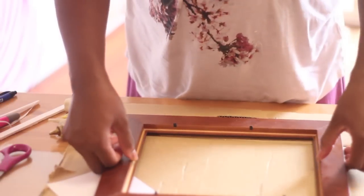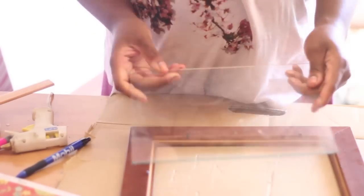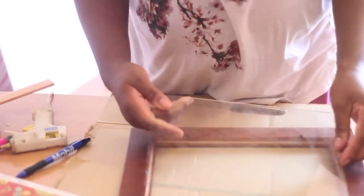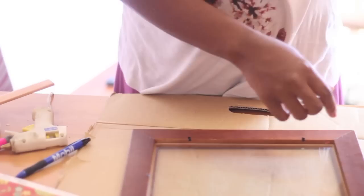Now it's time to pull that wooden frame back out. As you can see, I'm really pulling those metal prongs back, getting those out of the way. Once I've done that, I'm going to slide my glass back into the frame.